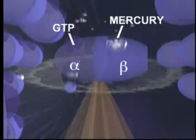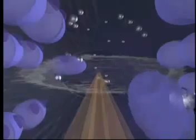Since bound GTP normally provides the energy which allows tubulin molecules to attach to one another, mercury ions bound to these sites prevent tubulin proteins from linking together.